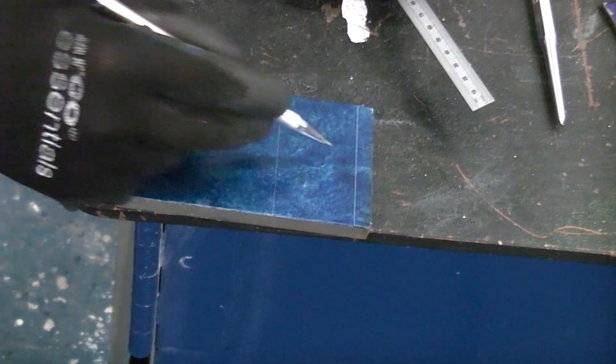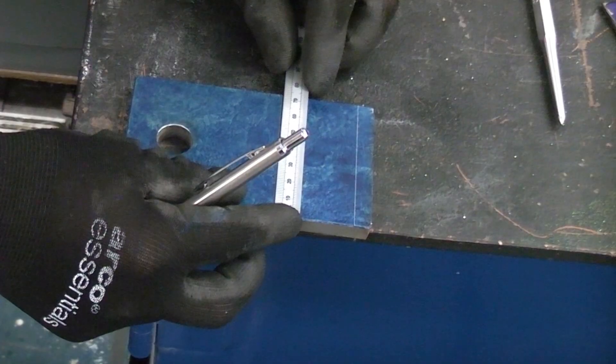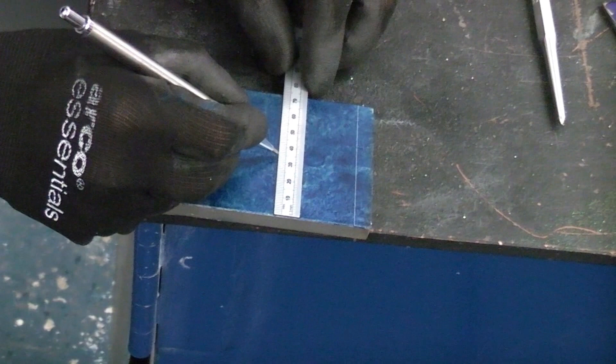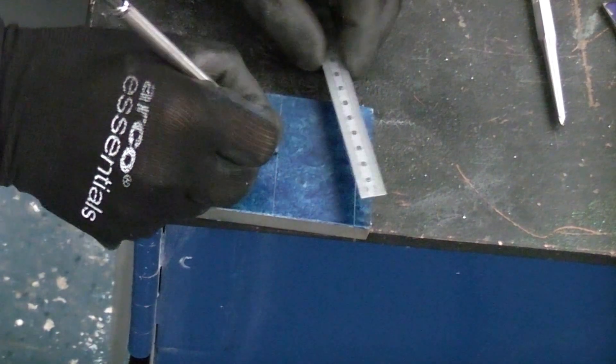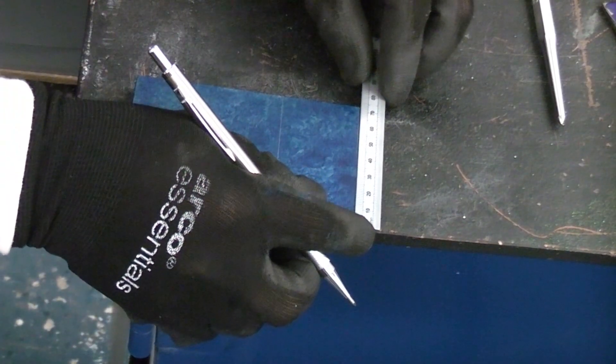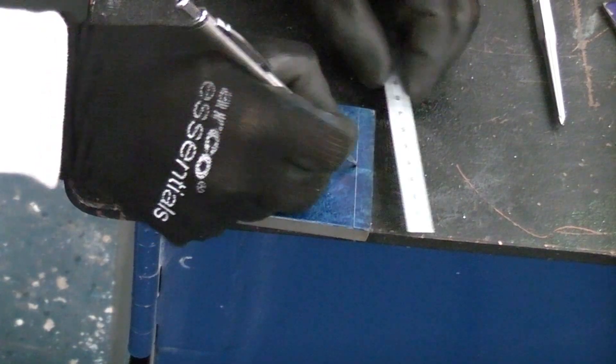We're now going to mark the centre of the piece of metal. So we know that both of these lines are completely parallel to each other so we can simply measure halfway which is 37mm. So I put a small mark there and then do the same on the other line.